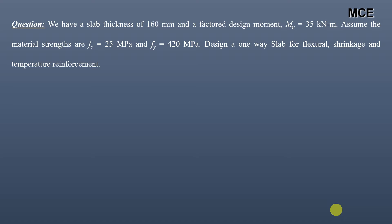One-way slabs are structural elements that primarily support loads in one direction. They are commonly used in buildings and consist of a single layer of reinforced concrete spanning between supports such as beams or walls. The reinforcement is typically placed in the direction where the slab is designed to resist bending moments, providing strength and stability. Welcome back to Master's Civil Engineering. In this video we will learn how to design a one-way slab for flexural, shrinkage, and temperature reinforcement.